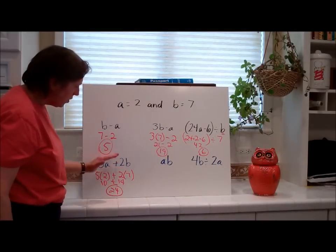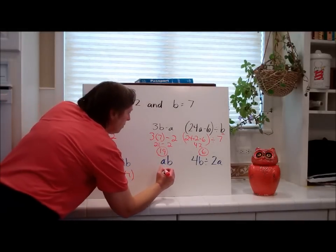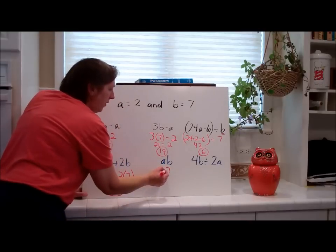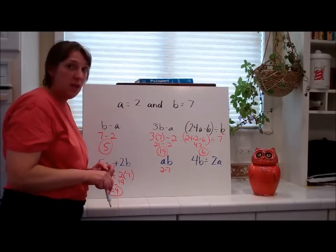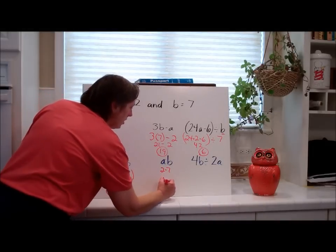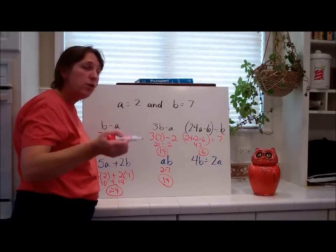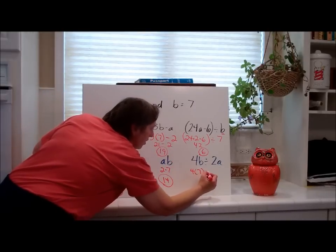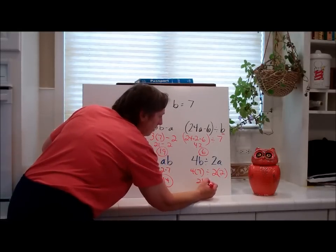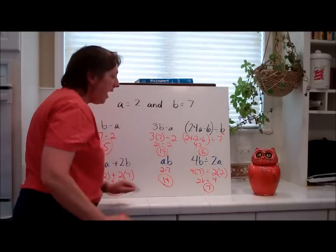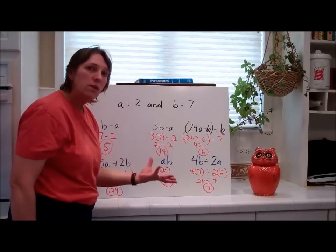AB — what operation is that? Multiplication. So I have 2 times 7. I have to put a dot there — it's not 27. AB does not stand for 27, it stands for 2 times 7, which is 14. This last one is 4B divided by 2A, meaning 4 times B divided by 2 times A. B is 7, so 4 times 7 in parentheses, divided by 2 times 2. 28 divided by 4 is 7. You have to show that step — you can't do it in your head.